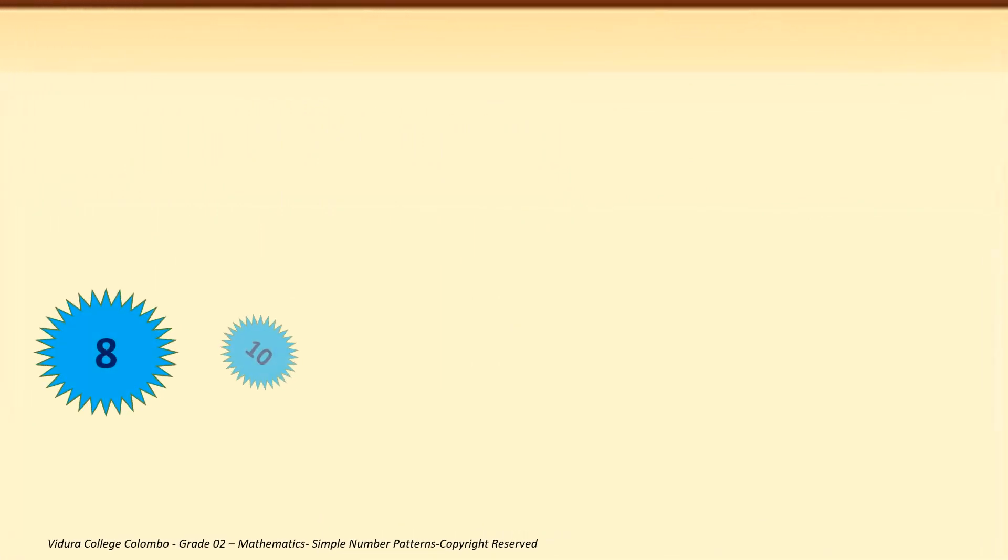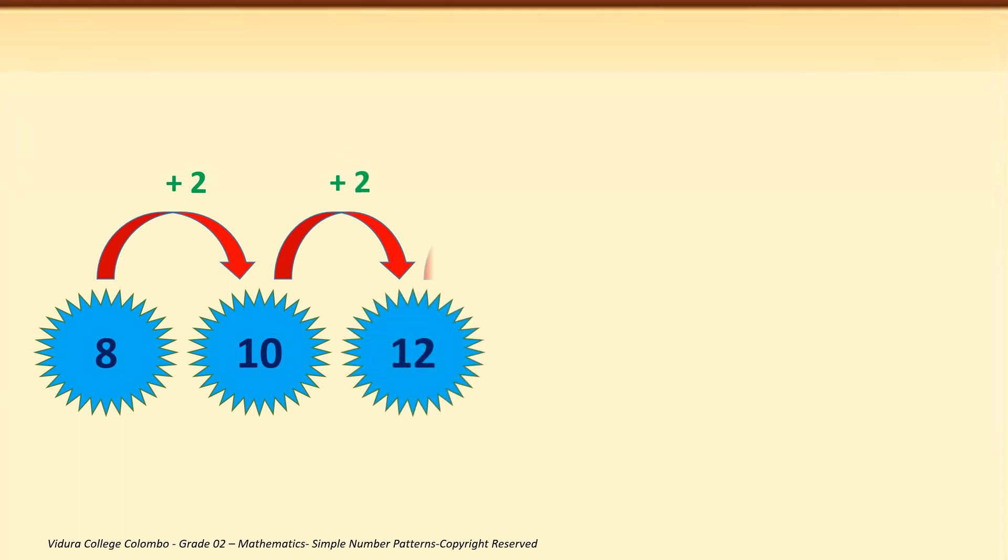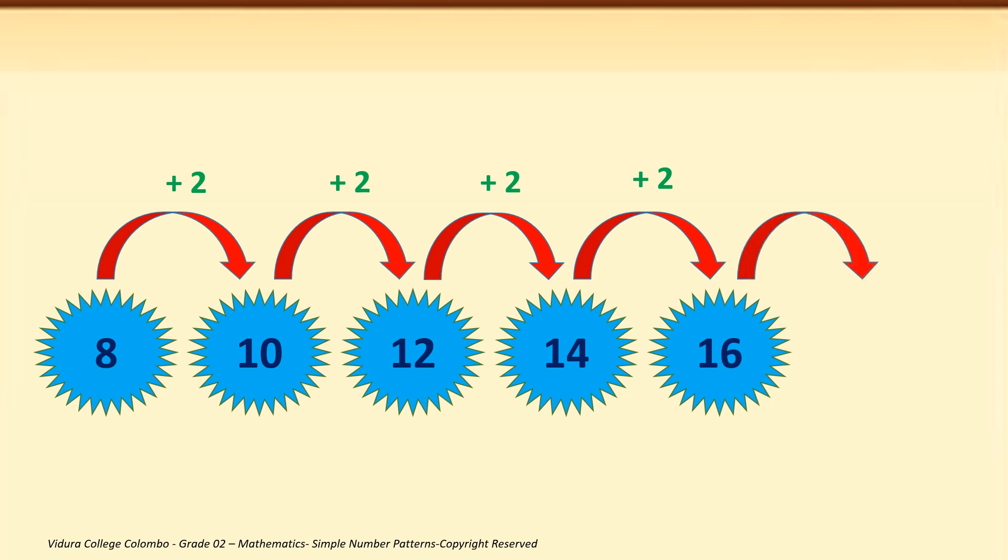Fifth example. 8, 10. The gap in between two numbers is 2. 10 plus 2 is 12. 12 plus 2 is 14. 14 plus 2 is 16. 16 plus 2 is 18. The gap is shown in green color. You can see the gap in between two numbers is 2.